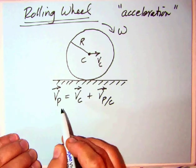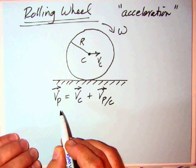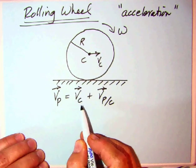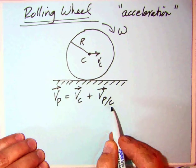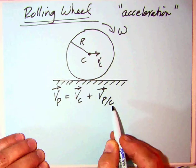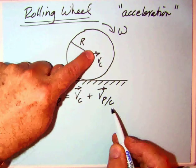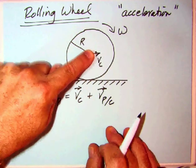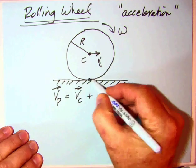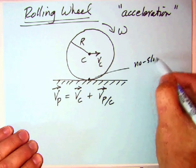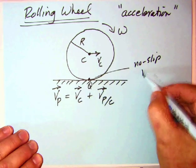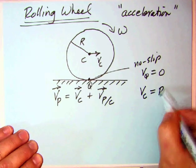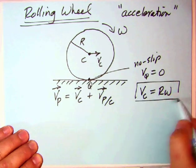We wrote down the relative motion equation where any point P on the rim of the wheel is the velocity of the center of the wheel plus the velocity of that particular point relative to point C, as if point C is fixed. One of the conditions was the no-slip condition where VQ equals zero, and what that resulted in was that the velocity of the center of the wheel was R omega.